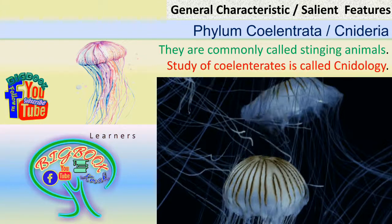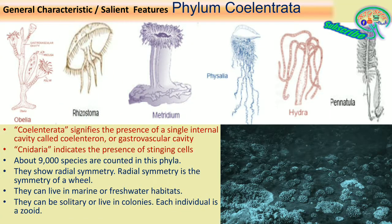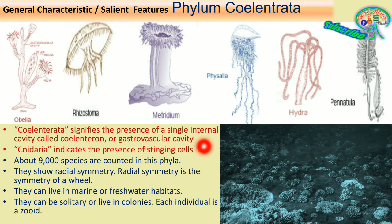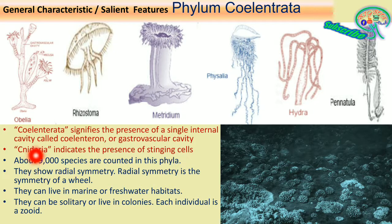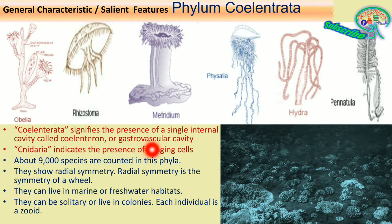Coelenterata signifies the presence of a single internal cavity called the coelenteron or gastrovascular cavity. The phylum is named Coelenterata because of this particular feature. Later it is also called Cnidaria because of the presence of stinging cells. These two different features are unique to the phylum: the presence of the coelenteron or gastrovascular cavity, and the presence of stinging cells.